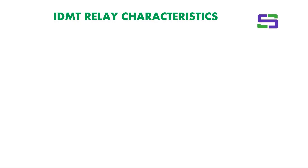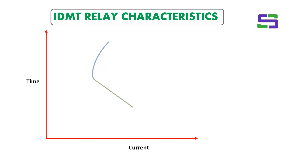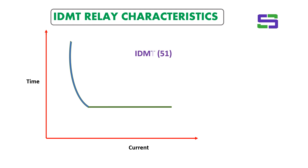Let's understand the IDMT relay characteristics. We will discuss in brief about the 50 and 51 relay characteristics and their relationship. This one is the 51 relay — IDMT relay 51 — which stands for inverse definite minimum time.